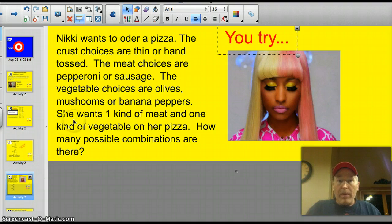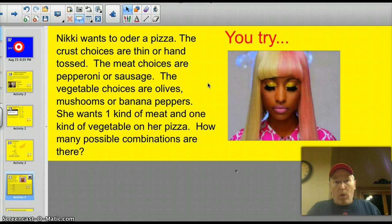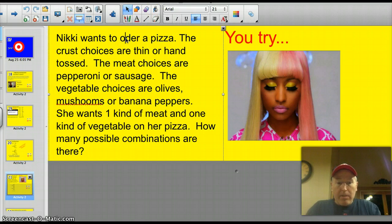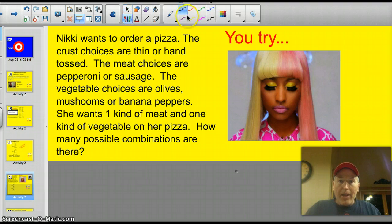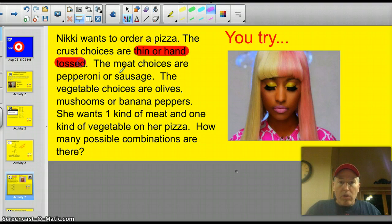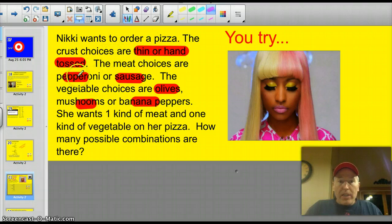All right. Well, I'm going to give you a shot with that type of question right away. And this is the classic pizza question. Nikki wants to order a pizza. The crust choices are thin or hand-tossed. The meat choices are pepperoni or sausage. The vegetable choices are olives, mushrooms, or banana peppers. She wants one kind of meat and one kind of vegetable on her pizza. How many possible combinations are there? All right. Let me give you a little bit of a hand here. I'm just going to grab a highlighter and highlight a couple things. Well, the meat, you've got thin or hand-tossed crust. You've got pepperoni or sausage. And then you've got olives, mushrooms, or bananas. So you've got two different kinds of crust, two different types of toppings, and three different types of vegetables. I want you to go ahead and see if you can solve that question.